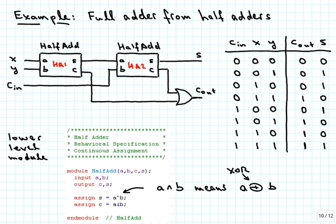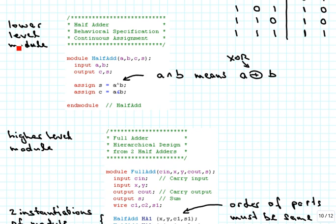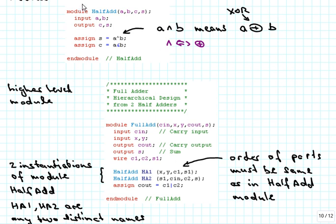We start from the lower-level module specification, which looks very similar to what we've done before. We have the module keyword and call it half_add. We use a behavioral description in the form of continuous assignments. The only thing new here is that rather than computing XOR for S in full detail, we simply put the XOR operator there — the caret (^) symbol corresponds to XOR in Verilog. And the carry is computed as the AND combination of A and B. So now we have the half adder defined as the lower-level module.